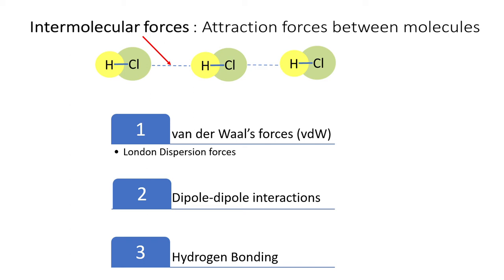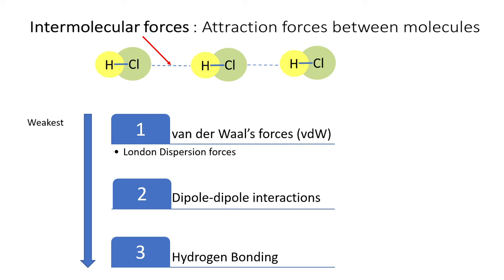There are three main types of intermolecular forces: Van der Waals forces, also known as London dispersion forces; the second is dipole-dipole interaction; and last but not least is hydrogen bonding. These intermolecular forces are placed in this sequence to indicate that they are not equal in terms of strength. Van der Waals forces is the weakest force and hydrogen bonding is the strongest of all three.